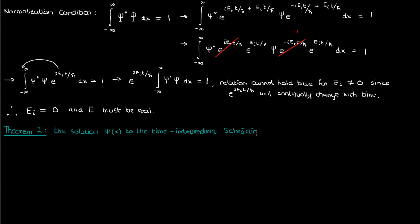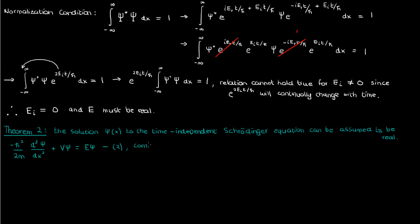The second theorem states that the solution ψ(x) to the time-independent Schrödinger equation can always be assumed to be real. That doesn't mean it always must be real — it just means that if you have a solution with an imaginary component, that solution is just part of a linear combination which is ultimately real. Let's start the proof by writing down the time-independent Schrödinger equation, which I'll call equation 2. The first step is to take the complex conjugate of both sides.